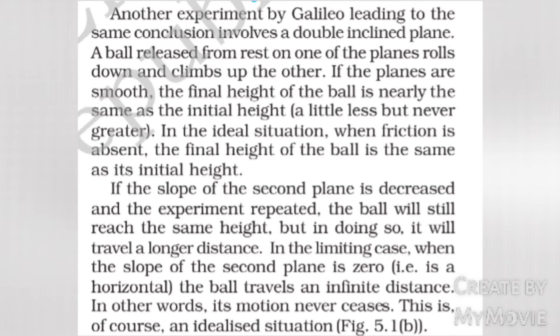If the slope of the second plane is decreased and the experiment repeated, the ball will still reach the same height, but in doing so it will travel a longer distance. In the limiting case, when the slope of the second plane is zero, i.e., it is horizontal, the ball travels an infinite distance. In other words, its motion never ceases. This is, of course, an idealized situation.